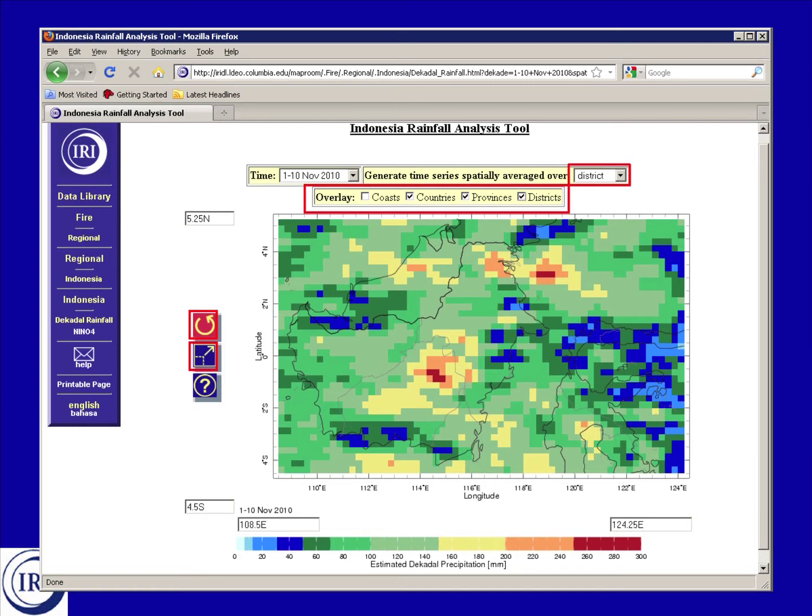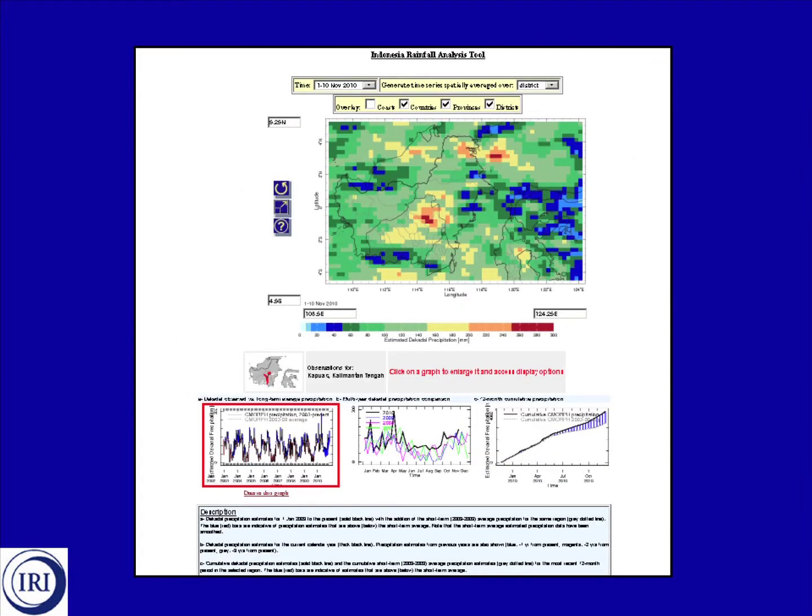At the upper right-hand side of the page, you see a drop-down menu that allows you to choose between the district and province option. You choose one of these options when you click on the map to view the time series of precipitation over either a district or a province. When you make that selection and then click on the map, you'll be shown additional information below the original map. One of the things you'll see is a map showing the location of the district or province that you selected along with the name of the district or province.